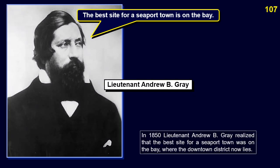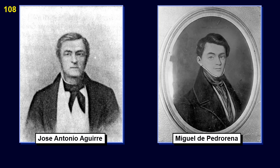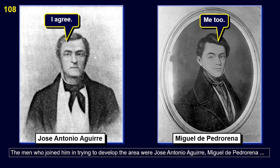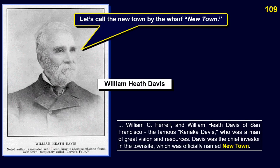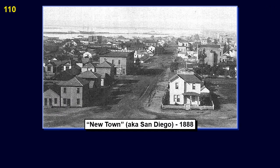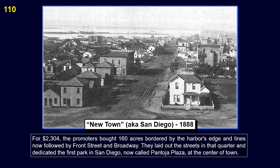In 1850, Lieutenant Andrew B. Gray realized that the best site for a seaport town was on the bay, where the downtown district now lies. The men who joined him in trying to develop the area were Jose Antonio Aguera, Miguel de Pedrarina, William C. Ferrell, and William Heath Davis of San Francisco — the famous Kanaka Davis — who was a man of great vision and resources. Davis was the chief investor in the town site, which was officially named Newtown. For $2,304, the promoters bought 160 acres bordered by the harbor's edge and lines now followed by Front Street and Broadway. They laid out the streets in that quarter and dedicated the first park in San Diego, now called Pantoja Plaza, at the center of town.